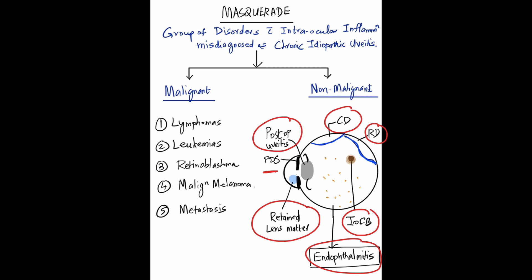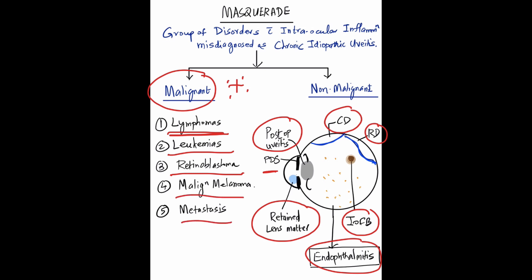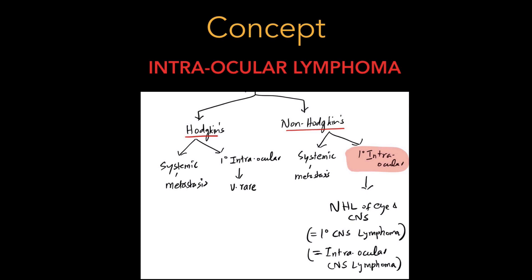Most importantly, the most life-threatening consideration is malignant conditions. They are not just vision-threatening — they are life-threatening. The first and foremost malignancy to consider is lymphomas. Then leukemias, retinoblastomas especially in childhood, malignant melanomas, and metastasis — all very important.